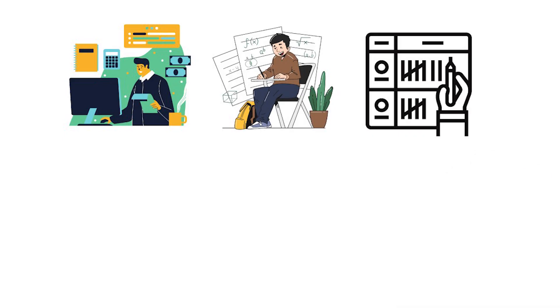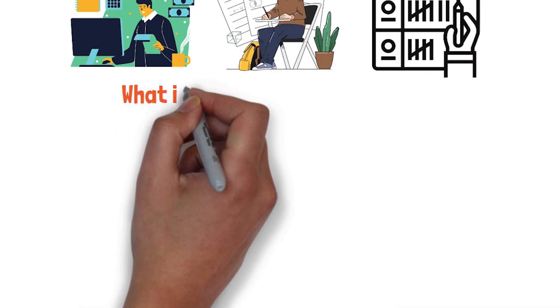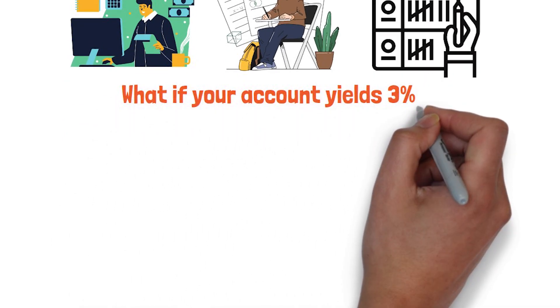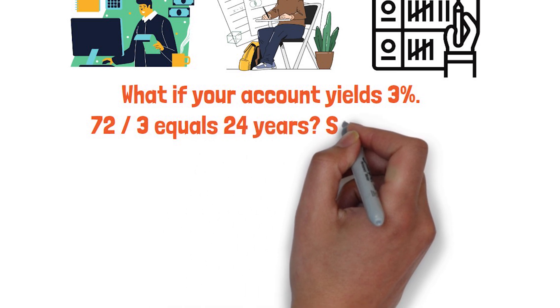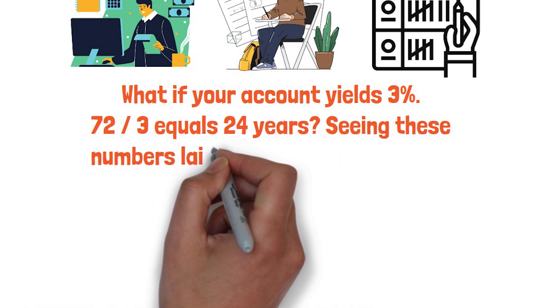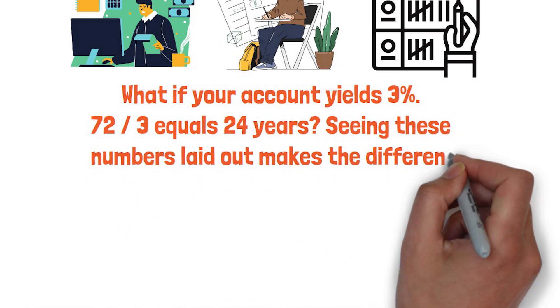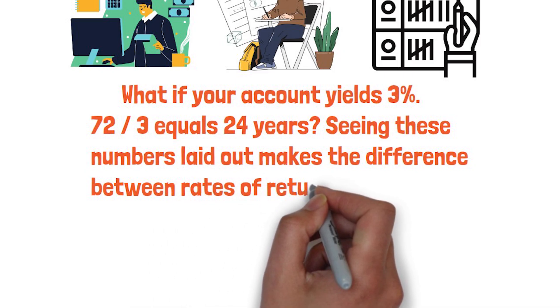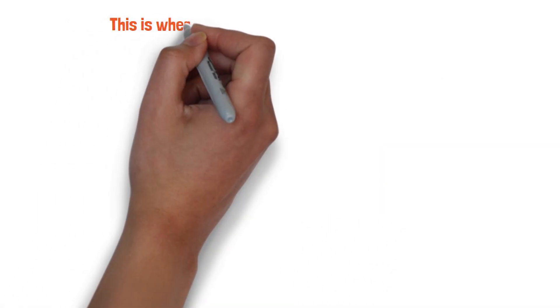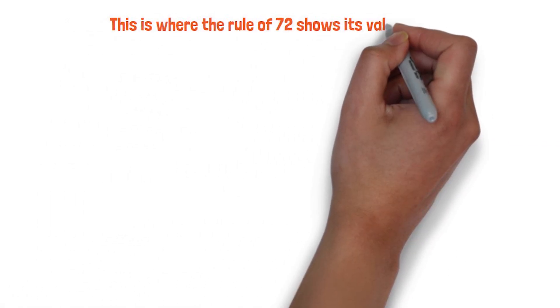Here's a quick challenge. What if your account yields 3%? 72 divided by 3 equals 24 years. Seeing these numbers laid out makes the difference between rates of return much easier to grasp. This is where the rule of 72 shows its value.